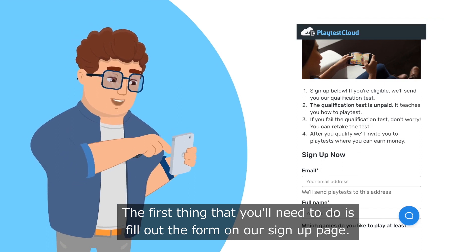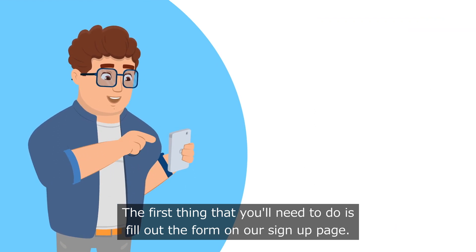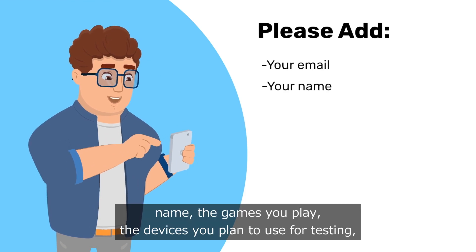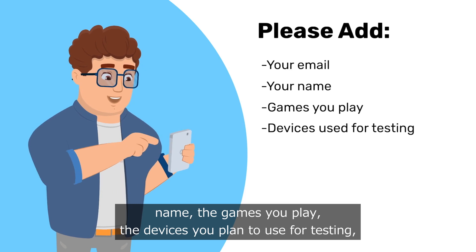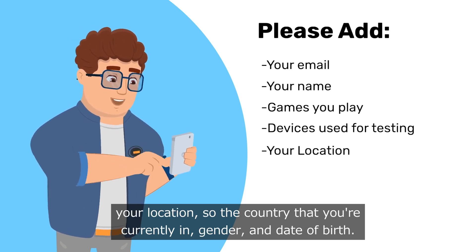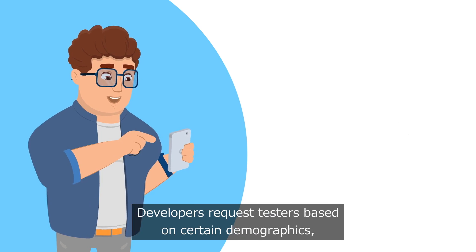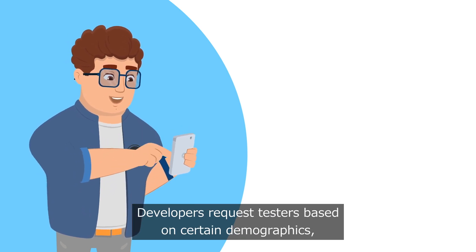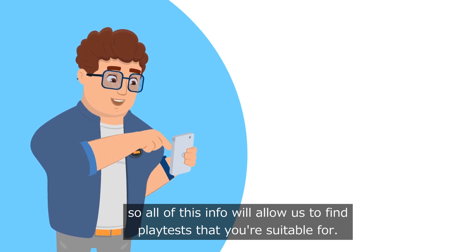The first thing that you'll need to do is fill out the form on our signup page. Here you will need to add your email, name, the games you play, the devices you plan to use for testing, your location so the country that you're currently in, gender and date of birth. Developers request testers based on certain demographics so all of this info will allow us to find playtests that you're suitable for.